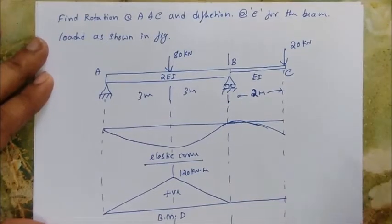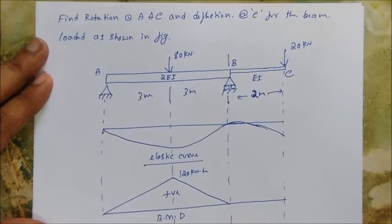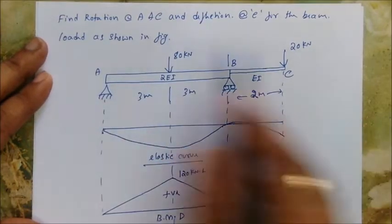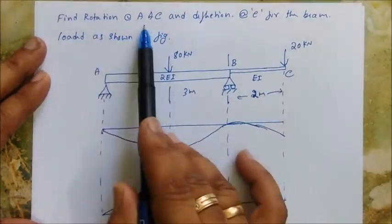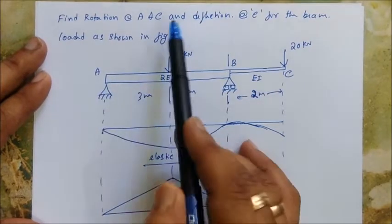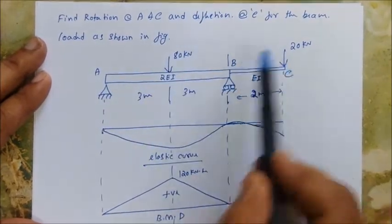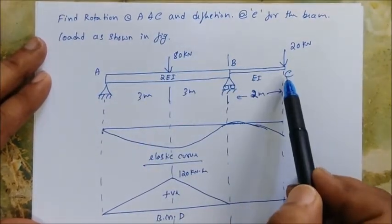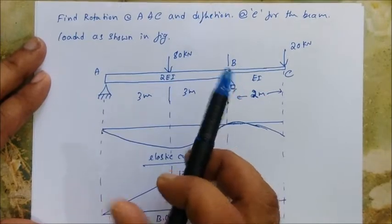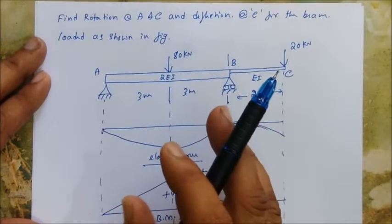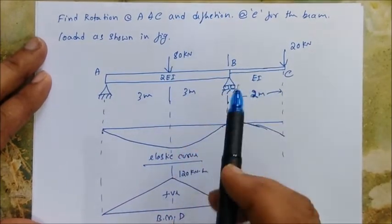Let's solve one more problem. Now it's an overhang beam — an entirely different problem. Find rotation at A and C, and deflection at C for the beam loaded as shown in the figure. It's a different problem now. Why is it different? It's got an overhang.